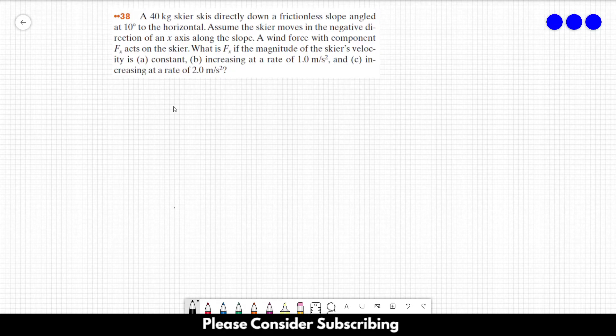Number 38. A 40 kg skier skis directly down a frictionless slope angled at 10 degrees to the horizontal. Assume the skier moves in the negative direction of an x-axis along the slope. A wind force with component fx acts on the skier. What is fx if the magnitude of the skier's velocity is constant, increasing at a rate of 1 meter per square second, and increasing at a rate of 2 meters per square second?